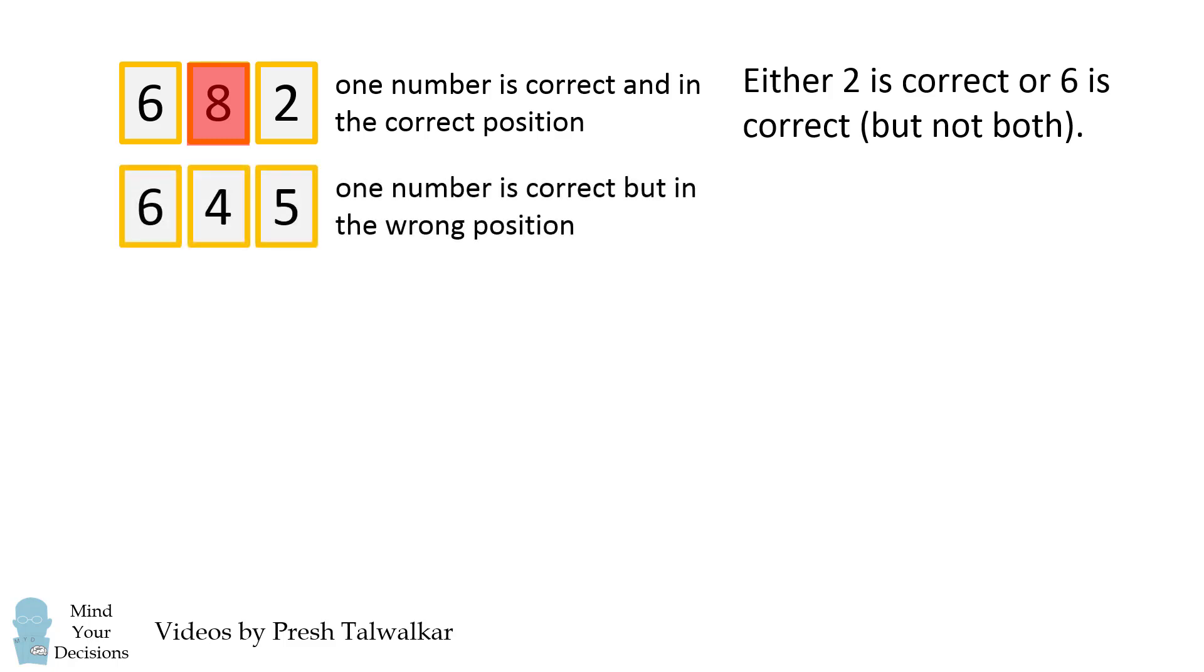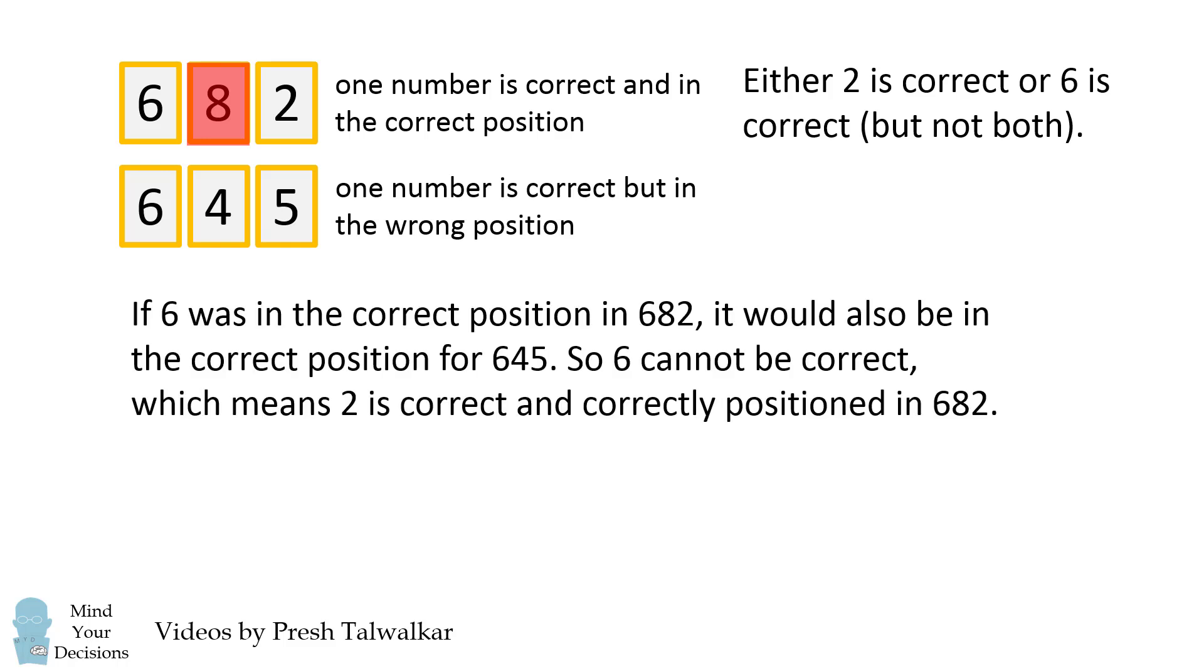Now, let's combine this information with the second clue that 645: one number is correct, but in the wrong position. If 6 was in the correct position in 682, it would also be in the correct position in 645. So 6 cannot be correct, and that means 2 is correct, and correctly positioned in 682. We've eliminated 6 as a possible number, and 2 has to be correct and in the third spot.